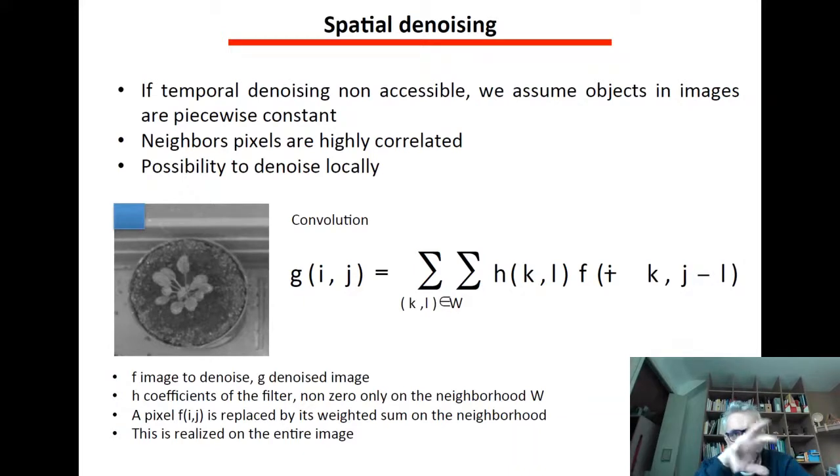So if you average locally, somehow you will keep the original gray level value which should have been a constant and remove the noise. So it's possible to denoise locally by performing this operation, which is the convolution.